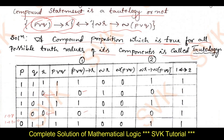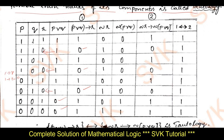Next, I need to find out ¬r and ¬(p∨q). The definition of negation: if there is 1, write 0; if there is 0, write 1. So for ¬r, wherever I have 1 in the r column I write 0, and wherever I have 0 I write 1. The same applies for ¬(p∨q): wherever you have 1 make it 0, and wherever you have 0 make it 1.